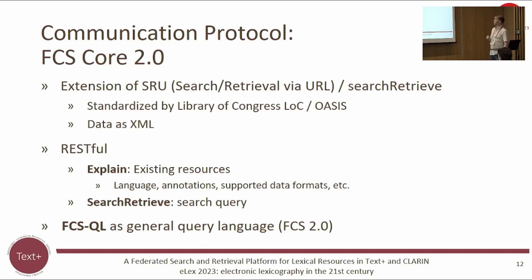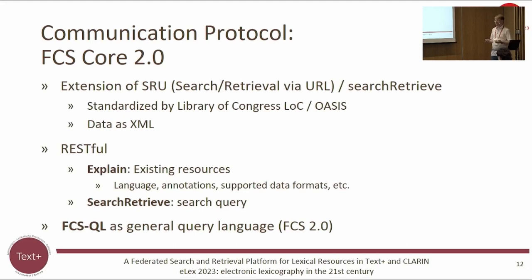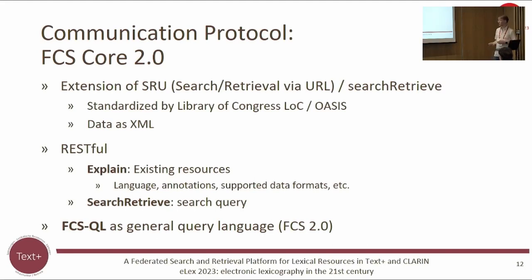The protocol builds on standards like Search/Retrieve via URL from the Library of Congress, Search/Retrieve by URL from OASIS, and data is encoded in XML. There are two operations: Explain, which lists resources including languages, annotations, and supported data formats; and SearchRetrieve, which performs queries. Alongside mandatory full-text search, there is a specialized corpus query language called FCS-QL.